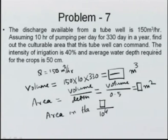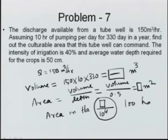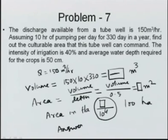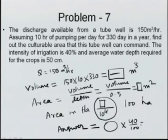Since intensity of irrigation is 40 percent, the tube well can actually serve only 40 percent of the computed area. So multiply the hectare value by 0.4 to get the final culturable commanded area. Always account for intensity of irrigation and losses to find the correct final answer.